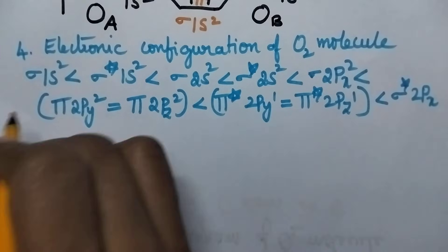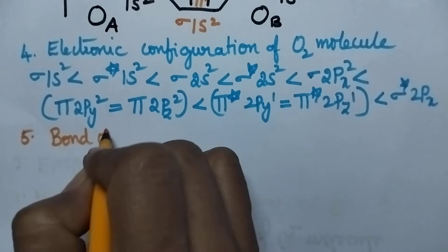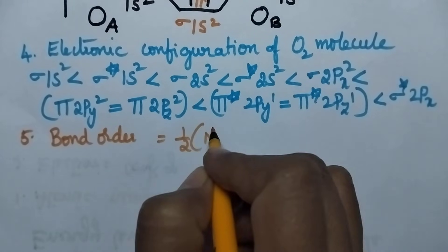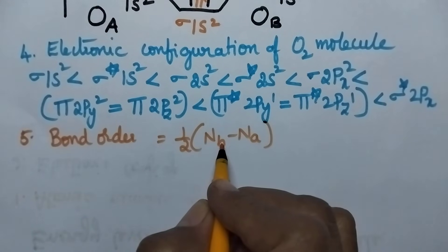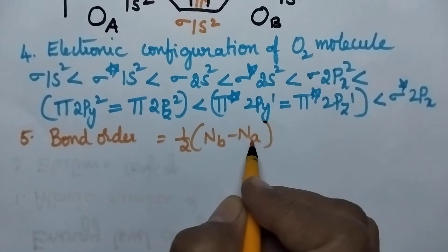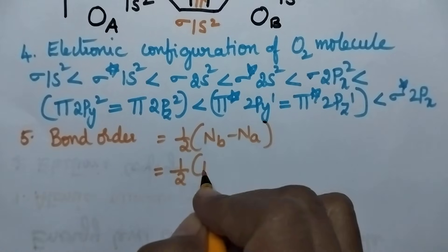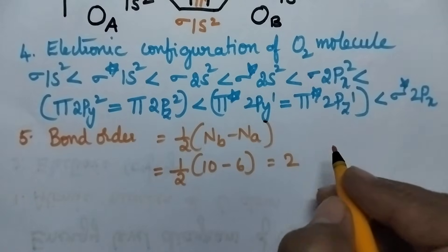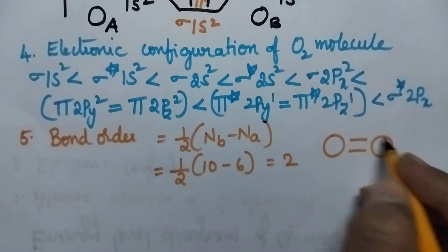Coming to the bond order, it is calculated using the formula: half of (Nb − Na), where Nb is the number of electrons in bonding molecular orbitals and Na is the number in antibonding molecular orbitals. That equals (10 − 6) / 2 = 2, so a double bond is present between the two oxygen atoms.